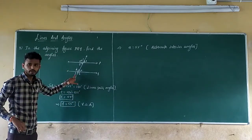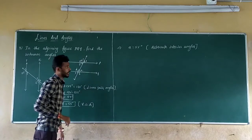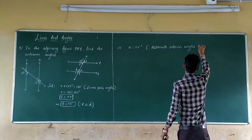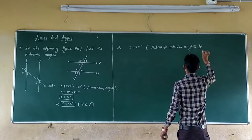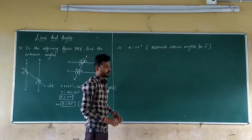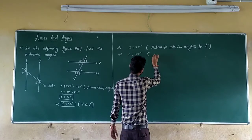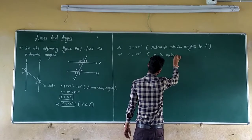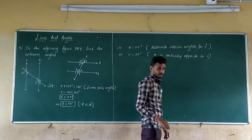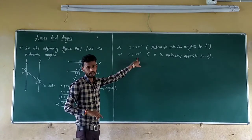Angle C is also 55 degrees because angle A and angle C are vertically opposite angles, so C equals A equals 55 degrees. Now for angle D: since D and 125 degrees are corresponding angles (as P is parallel to Q), D equals 125 degrees. Alternatively, angle A plus angle D equals 180 degrees (angles on the same side of the transversal are supplementary), giving D equals 180 minus 55 equals 125 degrees.